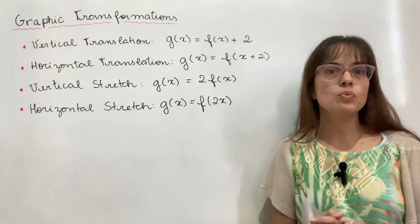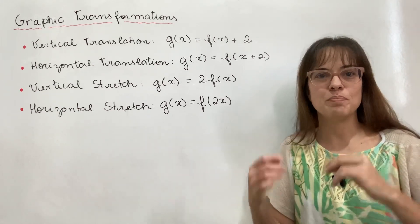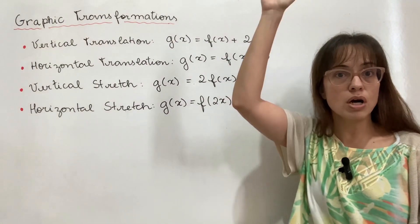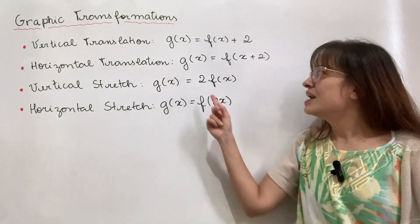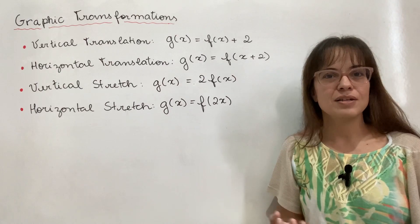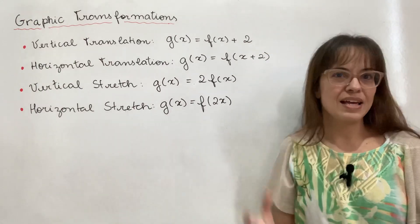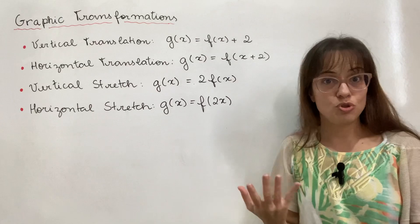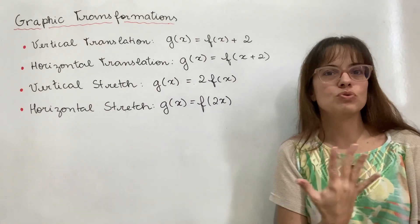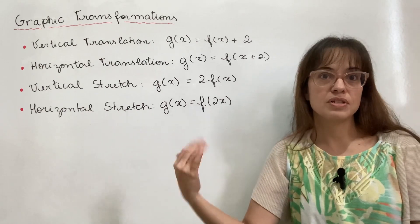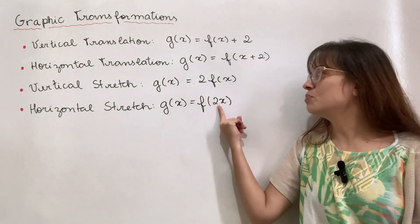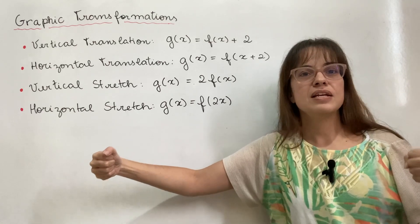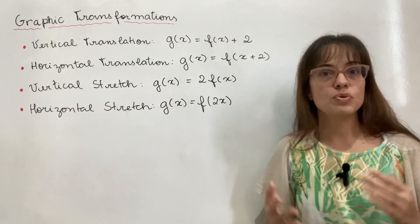What I mean when I say the horizontal axis acts backwards: with plus 2, you expect the function to go up — and that is what happens in vertical translations. Times 2, you expect it to become bigger — and that's exactly what happens in a vertical stretch. But in the horizontal translation, plus 2 — you'd expect the function to go to the right, but it actually goes to the left. And when you multiply x by 2, you'd expect it to get bigger, but what actually happens is that it becomes smaller. So it's backwards.